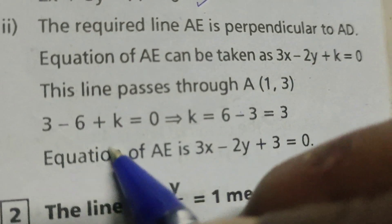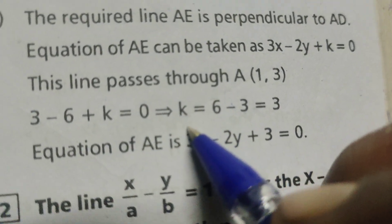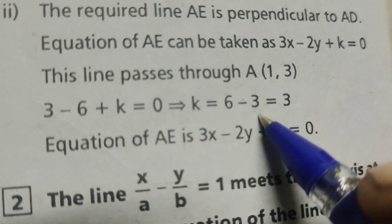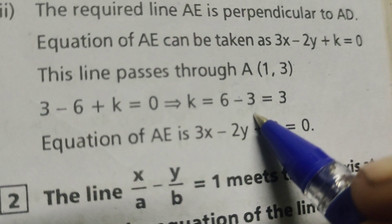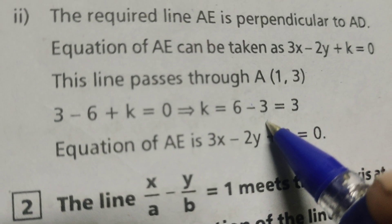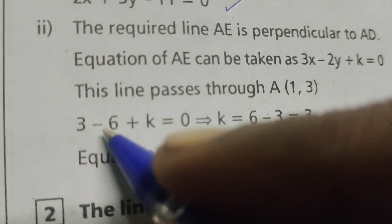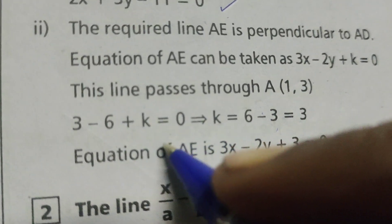Minus 3 plus k equals to 0. Then k equals to 6 minus 3. Here, k minus 3 equals to 0.